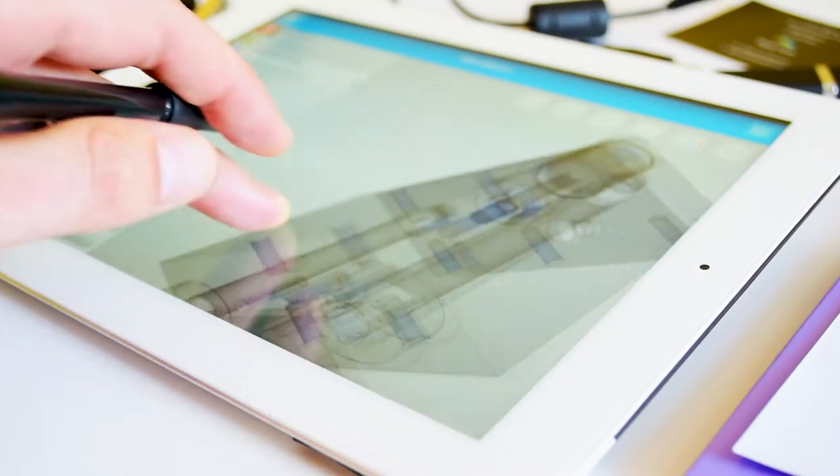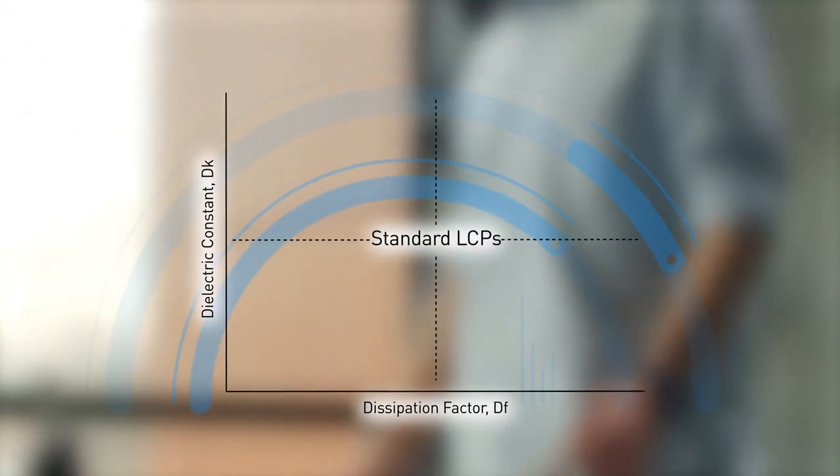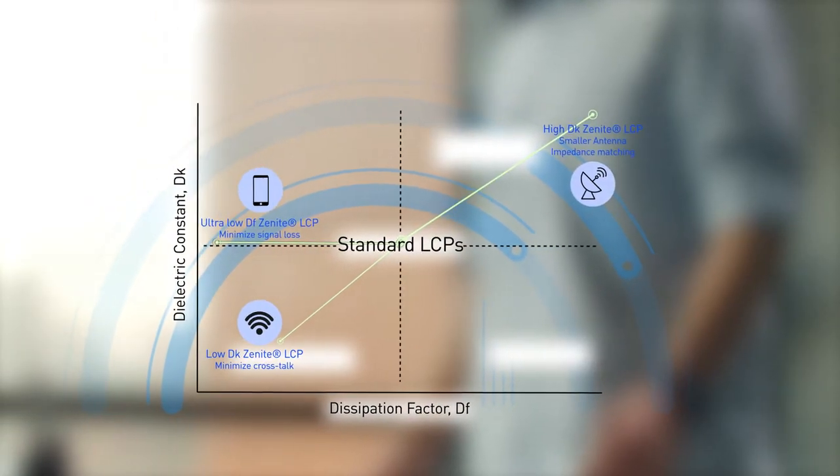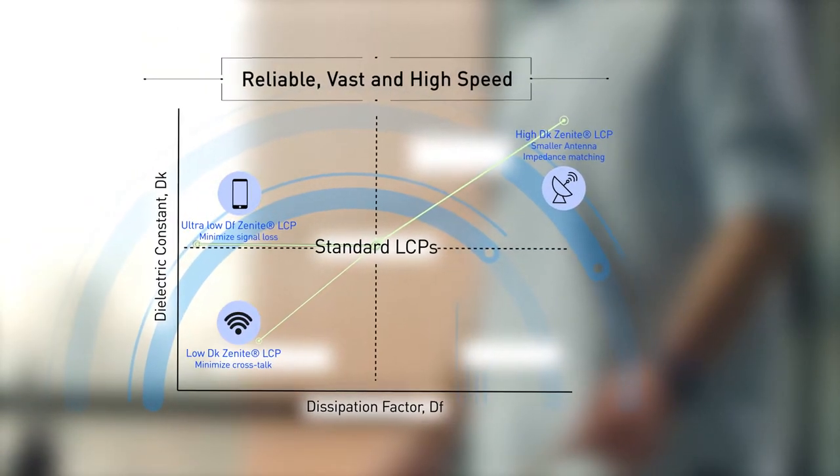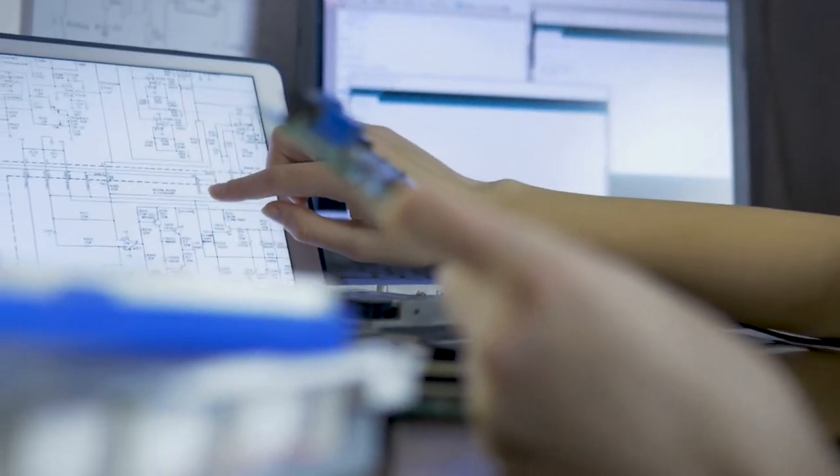To meet growing design demand, we've expanded our Vectra and Xenite LCP to include the DK and DF values necessary in achieving reliable, fast and high-speed network connections that can be tailored to your design requirements.